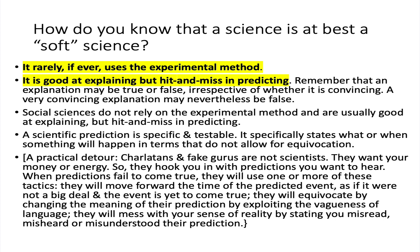Charlatans also mess with your sense of reality — a tactic used by disordered personalities like psychopaths and narcissists to gaslight you. They will say you misunderstood or misheard their true prediction. Fake gurus and fake prophets exploit people's lack of scientific understanding and people's hopes over rational, scientific thinking, because people want to believe that their preferred outcomes will come true — exposing themselves to psychological and financial exploitation. The scientific method can serve as a practical guard against being taken advantage of.